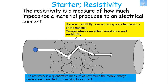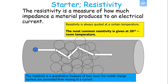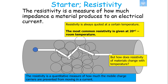However, there is an issue with resistivity, because it doesn't incorporate the temperature of a material. Whilst the length and the cross-sectional area don't affect the resistivity, the temperature does affect the resistivity and the resistance of a material. That is why, when you are quoting resistivity, you should always quote it at a certain temperature — for example, the resistivity of iron at 20 degrees Celsius, which is approximately room temperature.